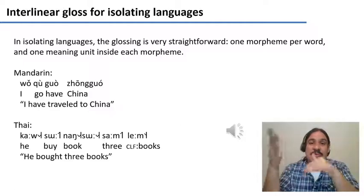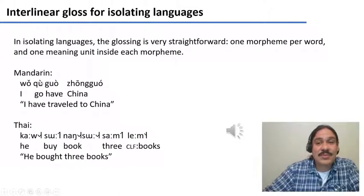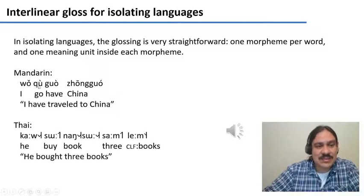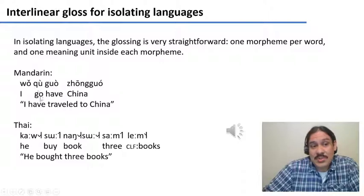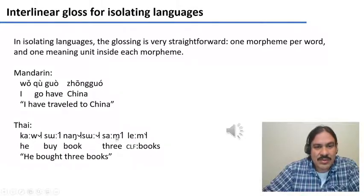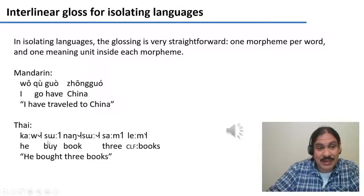So, how do different types of languages work? If you have an isolating language like Vietnamese, Mandarin, or Thai, the glossing is very simple and straightforward. Each of the words is going to contain one morpheme, and so this morpheme meaning line is just going to be the meaning of that one morpheme. For example, in Mandarin, '我去过中国' — I go have China — this word '去' is just the root of the verb to go. This sentence means 'I have traveled to China.' In Thai, the sentence means 'He bought three books,' with the words he, buy, book, three, and then the classifier for tomes — three book-shaped things. Each of the words has a single morpheme, so we just align them between the word and their meaning.